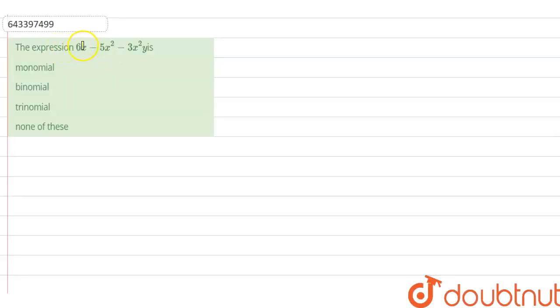Hi guys, we have a question right now. The expression 6x minus 5x square minus 3x square y is monomial, binomial, trinomial.